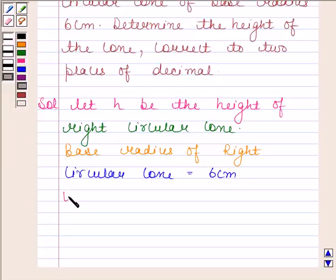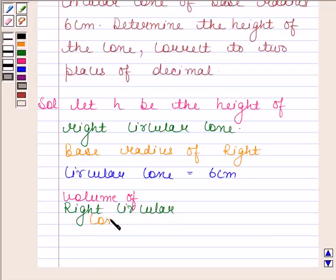Volume of right circular cone is 1/3 π r² h, that is 1/3 π (6)² h.